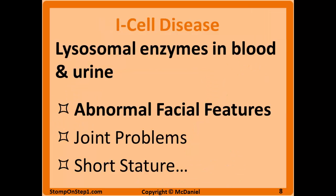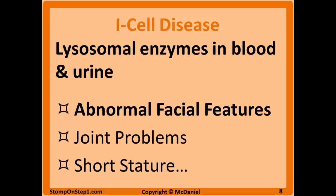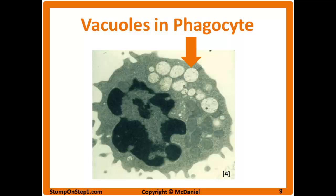Here are some clinical presentations of I-cell disease, also called inclusion cell disease. Lysosomal enzymes are detectable in blood, urine, and other body samples. One of the key features that appears most often in exam questions is abnormal or coarse facial features, which can be part of many inborn errors of metabolism but is a red flag to consider I-cell disease. You'll also have joint problems, short stature, and other issues. The name 'inclusion cell disease' comes from phagosomes building up with undigested material, visible as vacuoles.